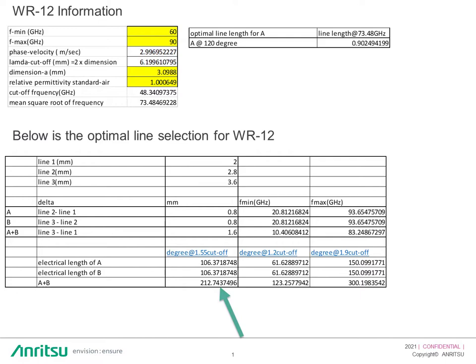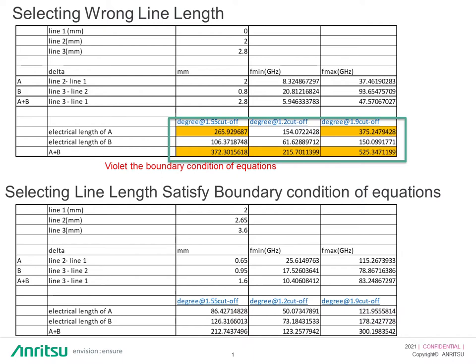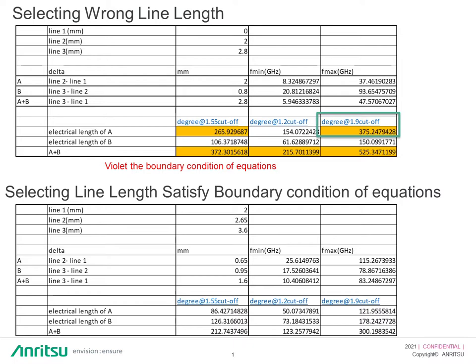If you select the wrong length — for instance, line 1 at 0mm, line 2 at 2mm, and line 3 at 2.8mm — you can see they all violate the equations. The electrical length of A goes beyond 180 degrees. For A plus B, it goes beyond 340 degrees. And at the 1.9 cutoff frequency, it goes beyond 180 degrees and even reaches 525 degrees. So they are invalid. As a result, you will see spikes in the S11 magnitude log plot in the measurement.